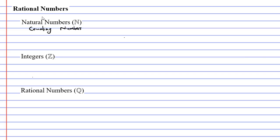The natural numbers are basically the numbers such as 1, 2, 3, 4, and so on. These are the numbers we use to count things. Now there is some debate among mathematicians as to whether zero should be included as part of the natural numbers. For this lesson, I'm going to include zero as part of the natural numbers. You'll also notice the symbol we use for the natural numbers has a kind of double stroke — that is the symbol for natural numbers.